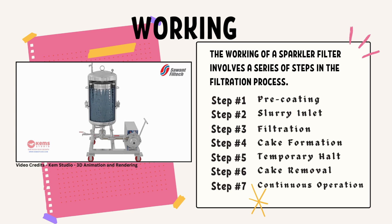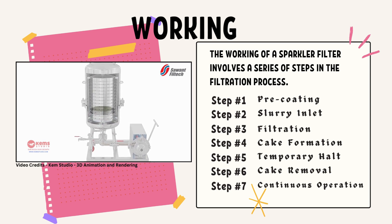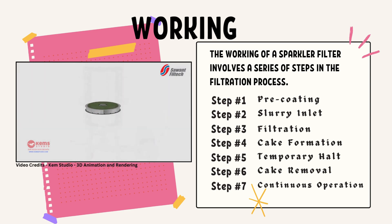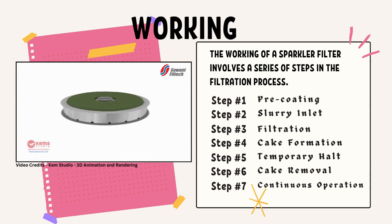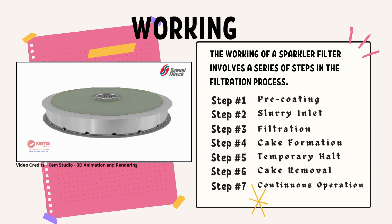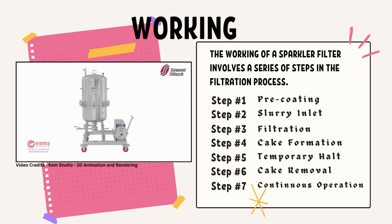When the cake layer becomes thick enough to impact the filtration process, the process is temporarily halted. The cake is then removed from the filter plates through methods such as backwashing, scraping, or using compressed air to dislodge and discard the accumulated solid particles. After cake removal, the filtration process is resumed, allowing for continuous operation. The sparkler filter is designed to operate in cycles of filtration, cake formation, and then cake removal.